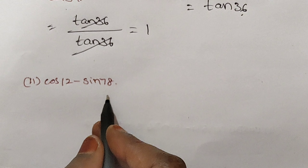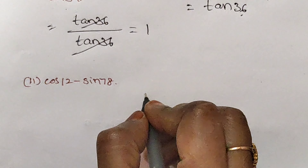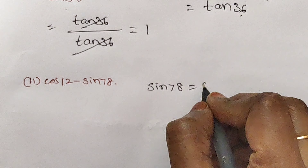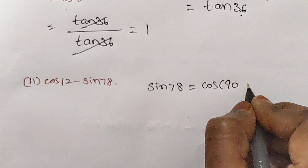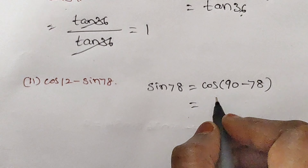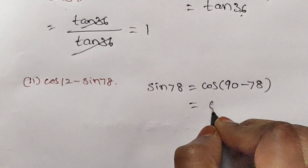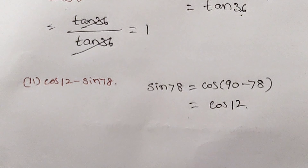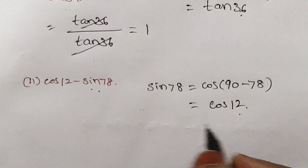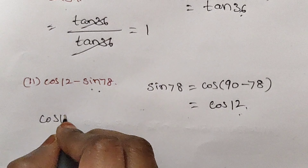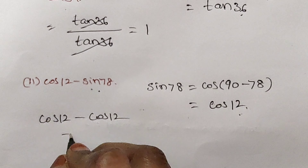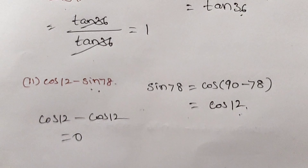Cos 12 minus sin 78. Sin 78 can be written as cos(90 minus 78). So cos(90 minus 78) is cos 12. Instead of sin 78, I will write cos 12. So cos 12 minus cos 12 is 0.